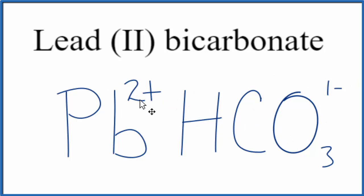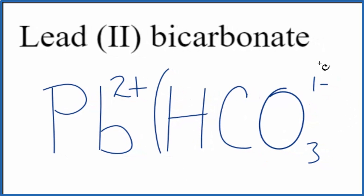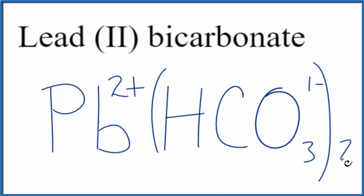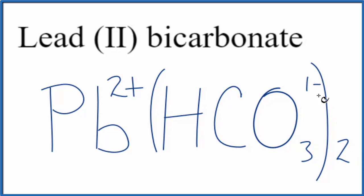So we have a 2 plus here and a 1 minus here. If we put parentheses around the bicarbonate ion, put a 2 outside, 2 times 1 minus, that's 2 minus, we have the 2 plus. That adds up to 0, net charge of 0.